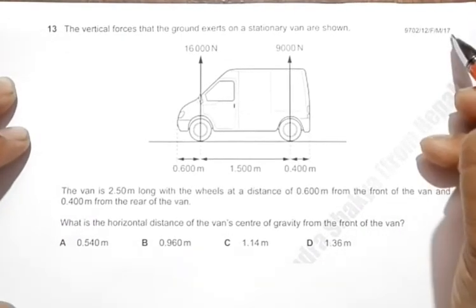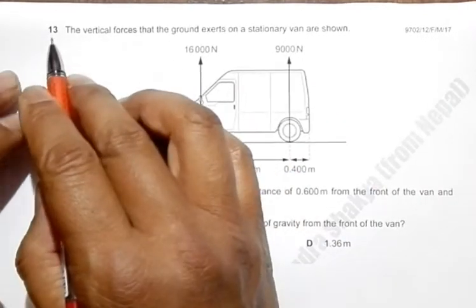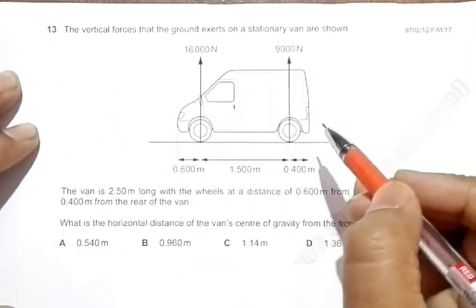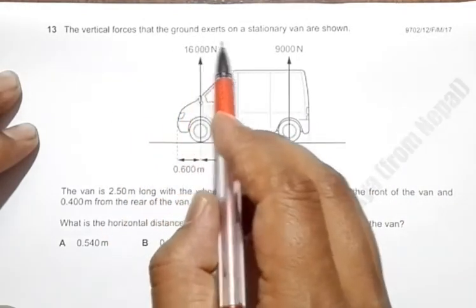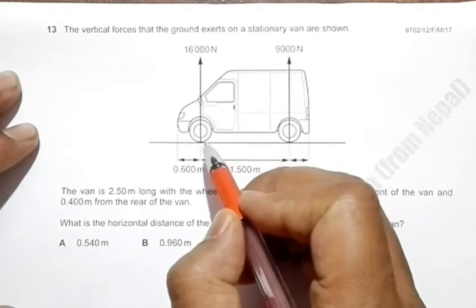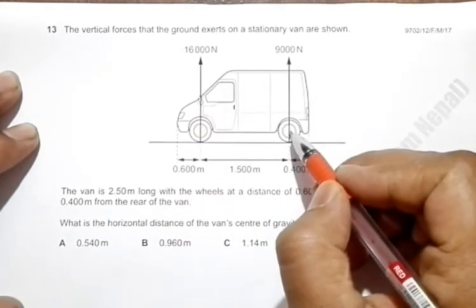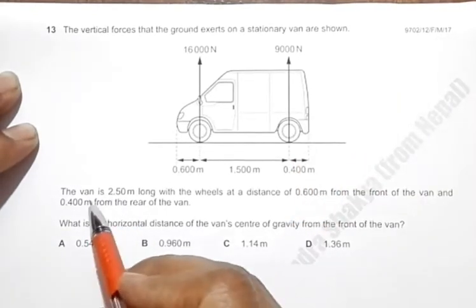This is question 13 from the 2017 February-March paper 1-2. We have a stationary van here where the vertical forces that the ground exerts on the van are shown. On the front wheels it is 16,000 Newtons upward, and on the rear wheels it is 9,000 Newtons upward. The length of the van altogether is 2.50 meters.